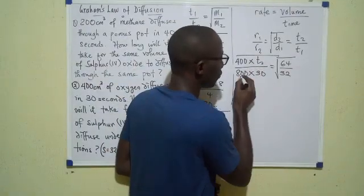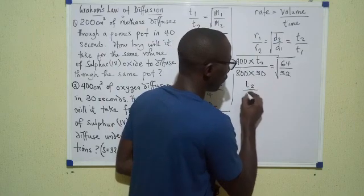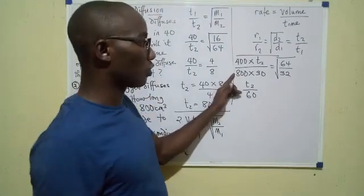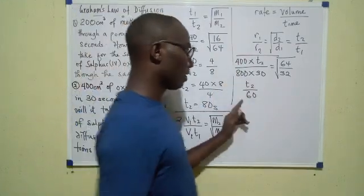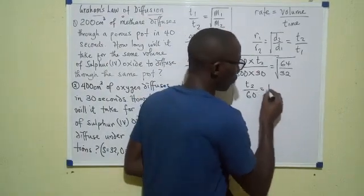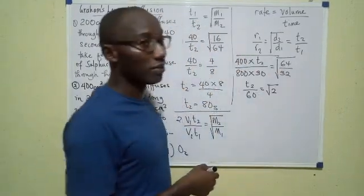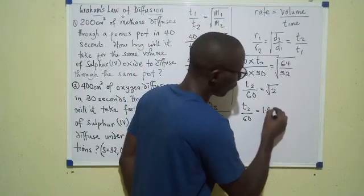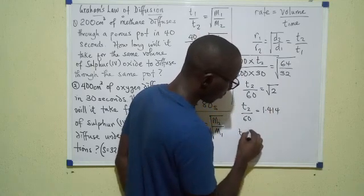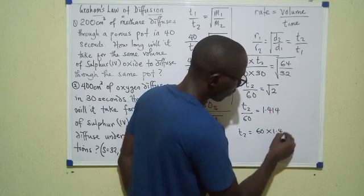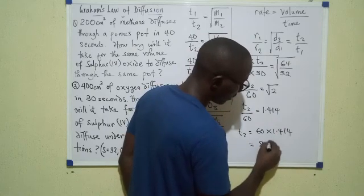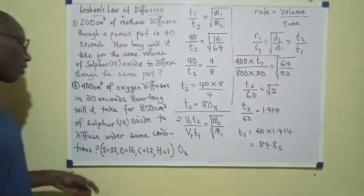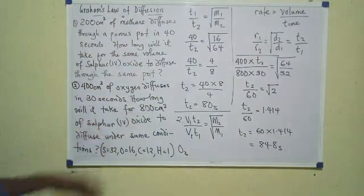So moving on, I have 400 t2 over 800 times 30, which simplifies to t2 over 60. t2 over 60 equals root 2, which is 1.414. So t2 becomes 60 times 1.414, and that gives us 84.8 seconds. So it takes 84.8 seconds for 800 cm³ of sulfur(IV) oxide to diffuse through the same porous pot.